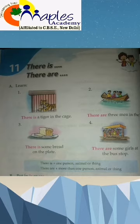We will use 'there is' for one person, one animal, or one thing. We will use 'there are' for more than one person, animal, or thing. For example: